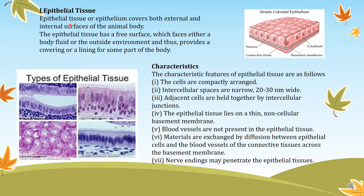What is an epithelial tissue? Epithelial tissue, or epithelium, covers both the external and internal surfaces of the animal body. The epithelial tissue has a free surface which faces either a body fluid or the outside environment, and thus provides a covering or lining for some part of the body. These are examples of epithelial tissue lying on a basement membrane. Below the basement membrane is connective tissue, which is responsible for transporting all necessary things for the cells.